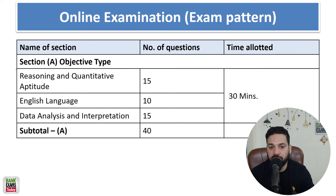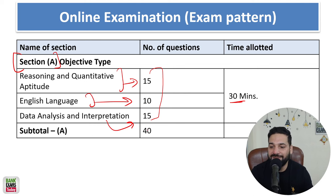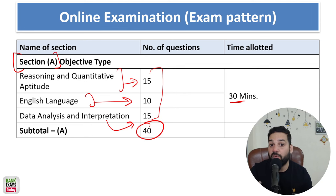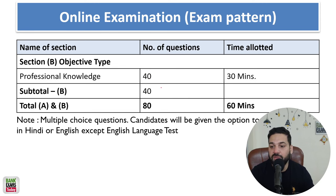In Paper 1, Section 1, there is Reasoning and Quant — 15 questions — followed by English Language — 10 questions — and Data Interpretation — 15 questions. Within 30 minutes you have to solve these 40 questions, so if any question is taking more than a minute, you have to leave it. Then there is Professional Knowledge — 40 questions in 30 minutes. Total 80 questions to be solved within 60 minutes.